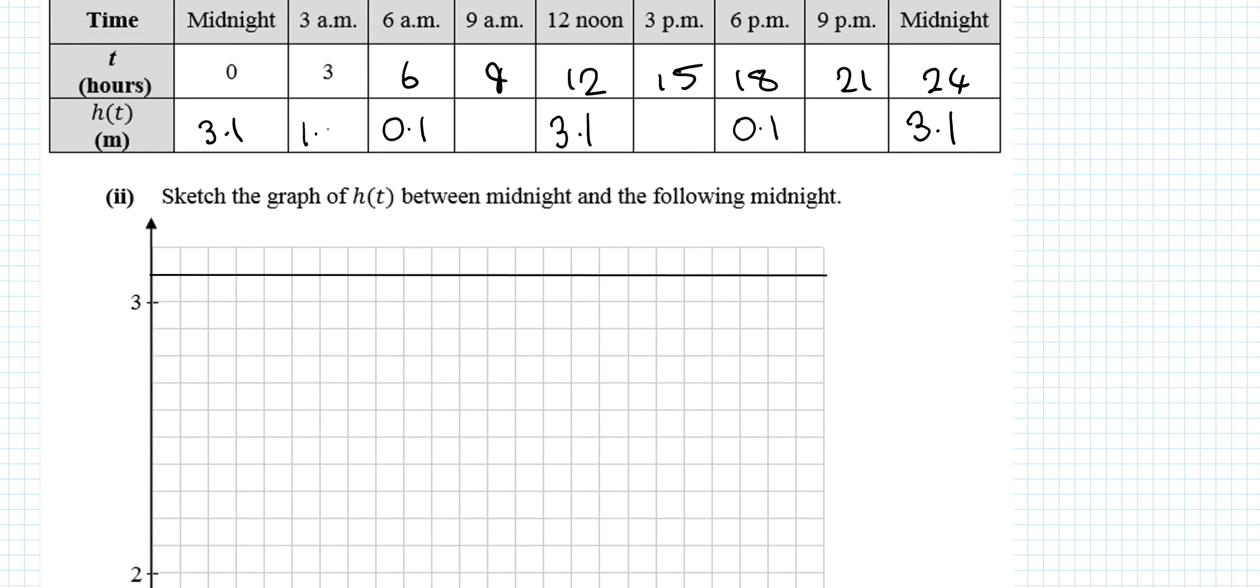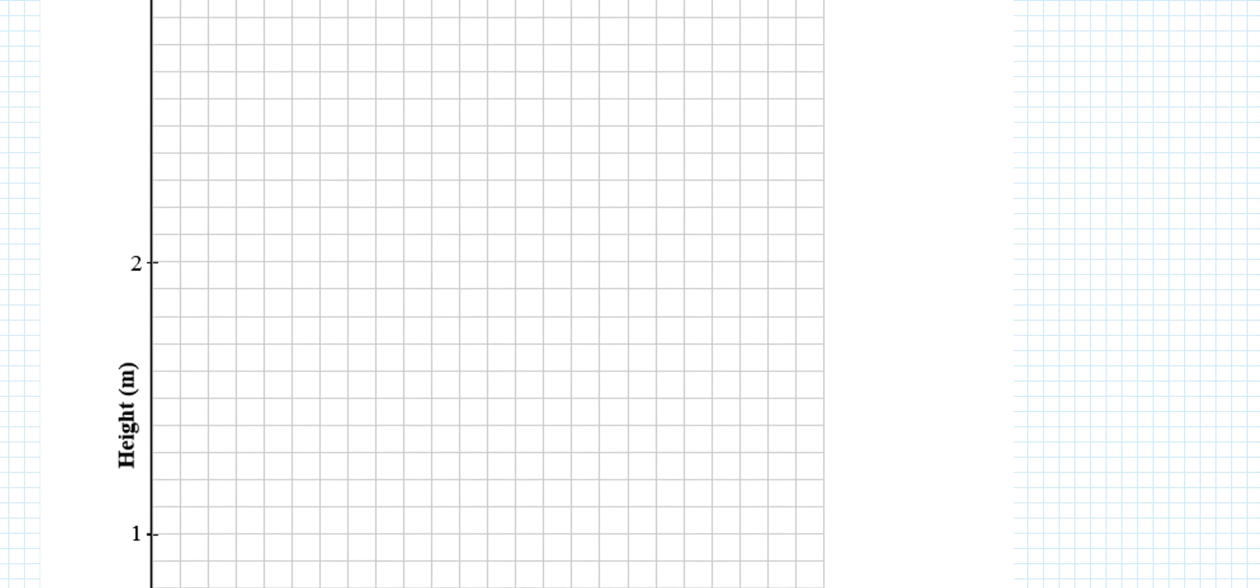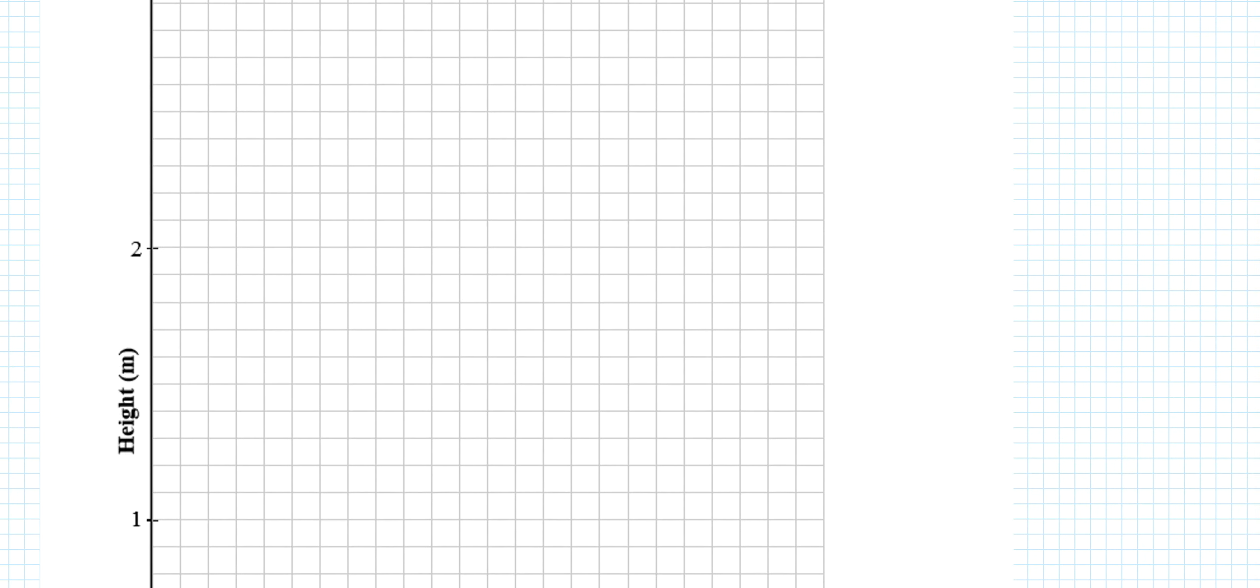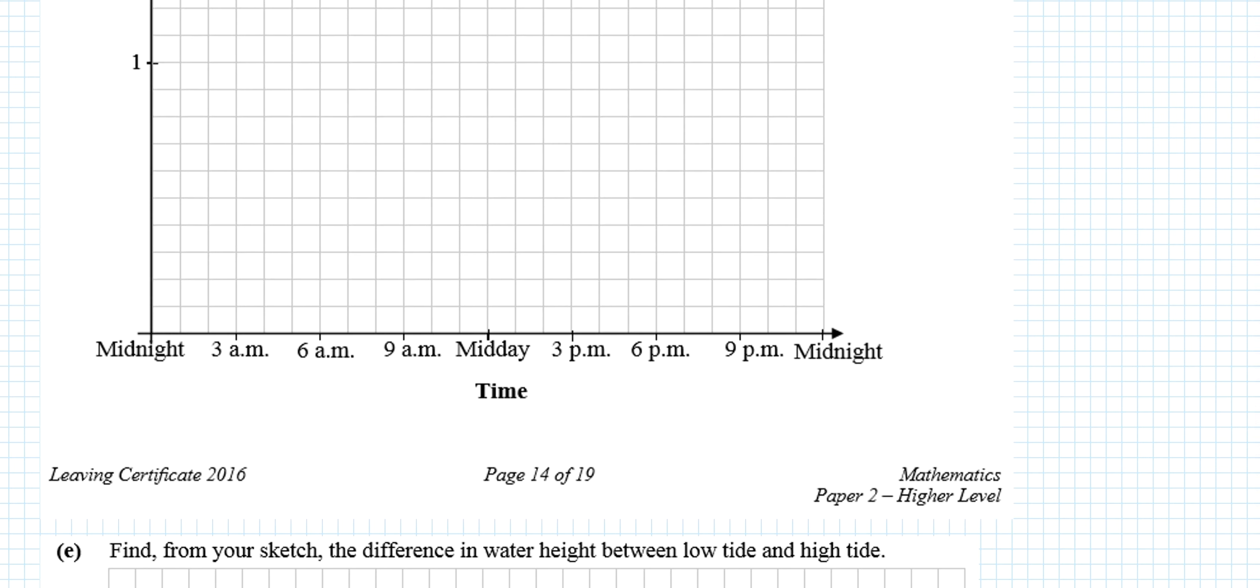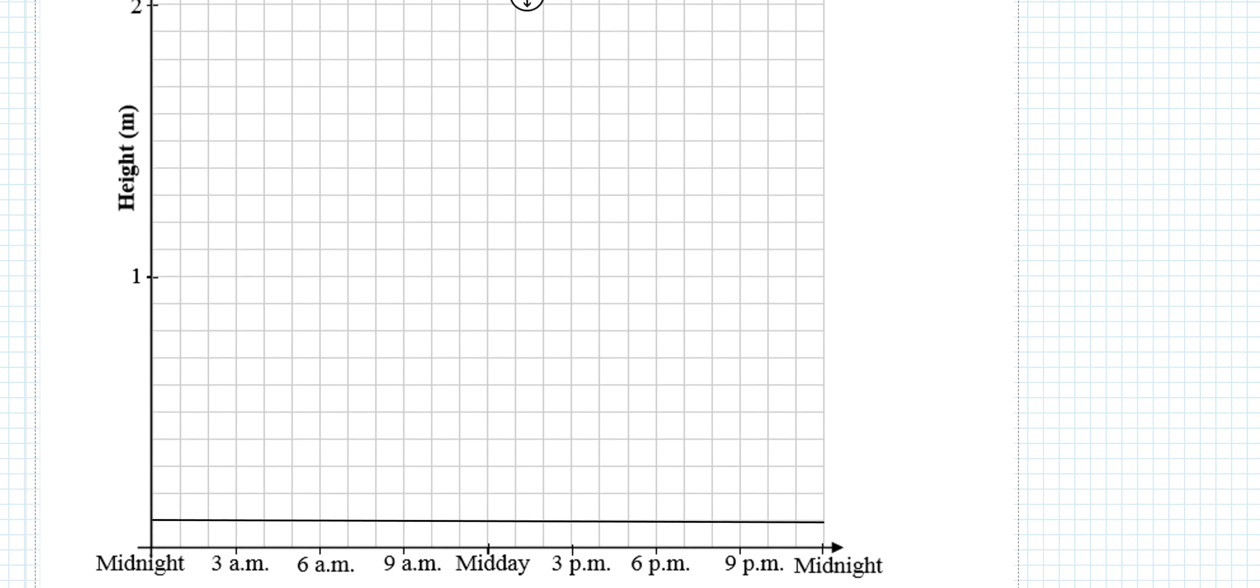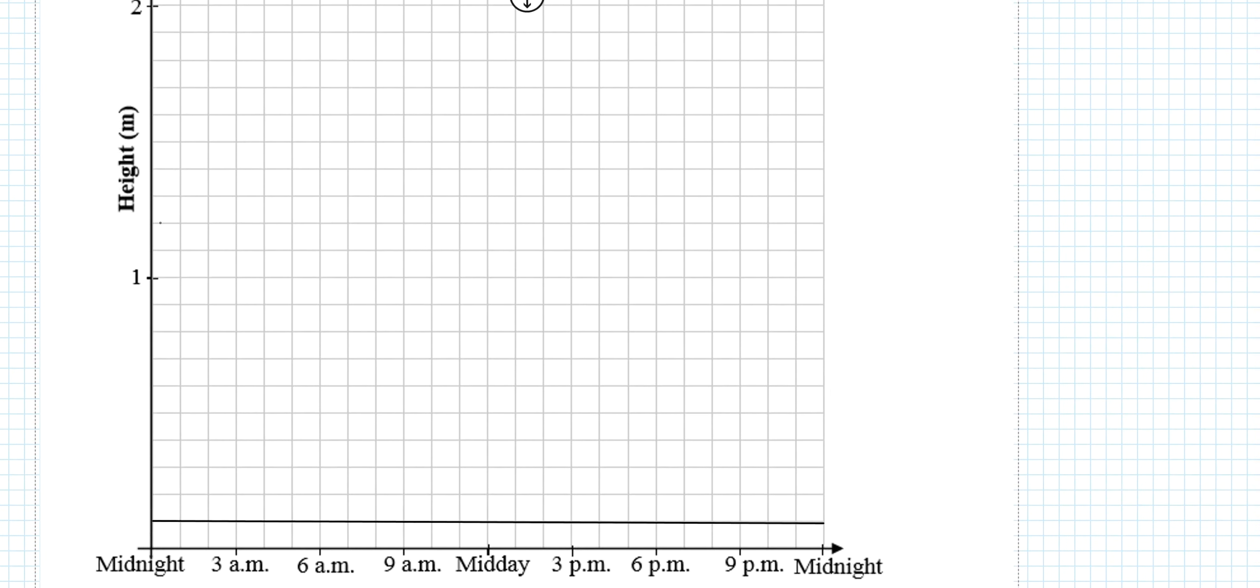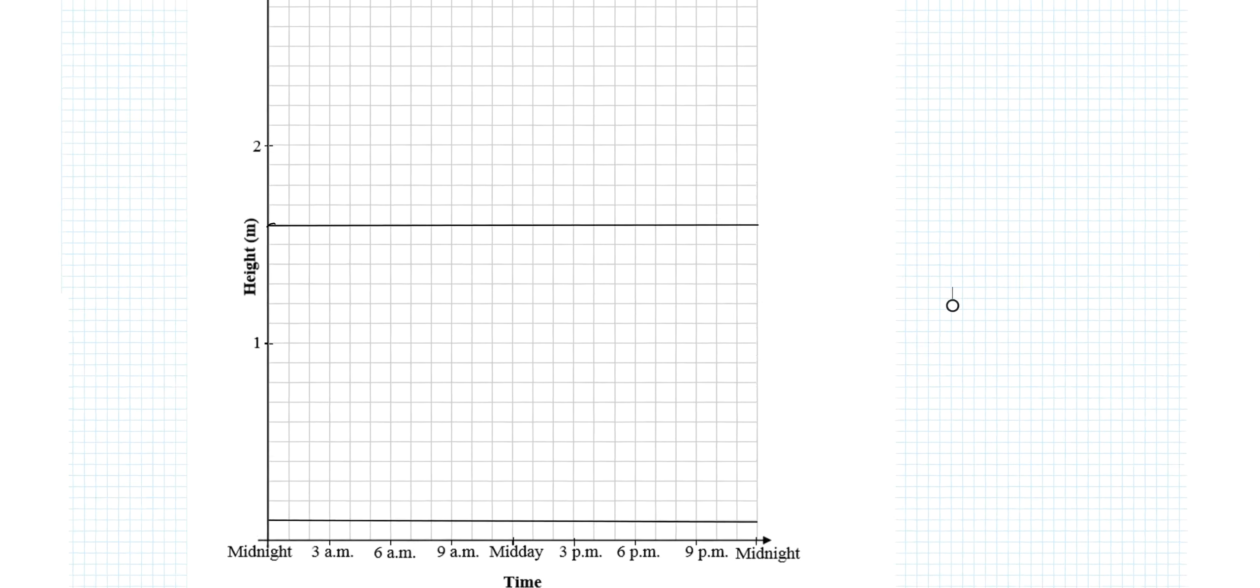Halfway between high tide and low tide it'll be at its medium, which was 1.6. Again, 1.6, 1.6, and 1.6. So that 3.1, 0.1, and 1.6 are really important. I'm going to have to zoom out a bit to actually draw in the graph. 0.1 - never going to go below that line. And also the 1.6.